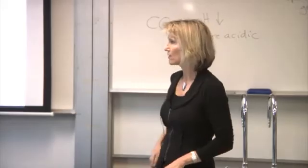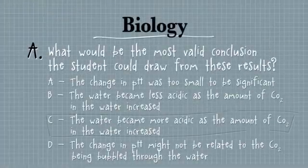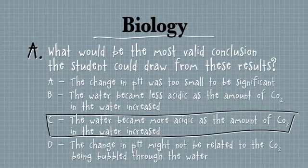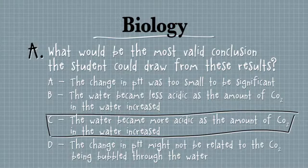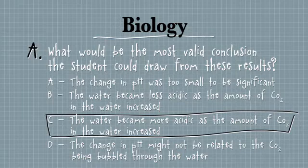So let's have a look at the choices. Change in pH is too small to be significant. Well, your normal pH of your blood is very narrow limits, 7.35 to 7.45 is normal. So even a very small change is going to be highly significant. So not right.